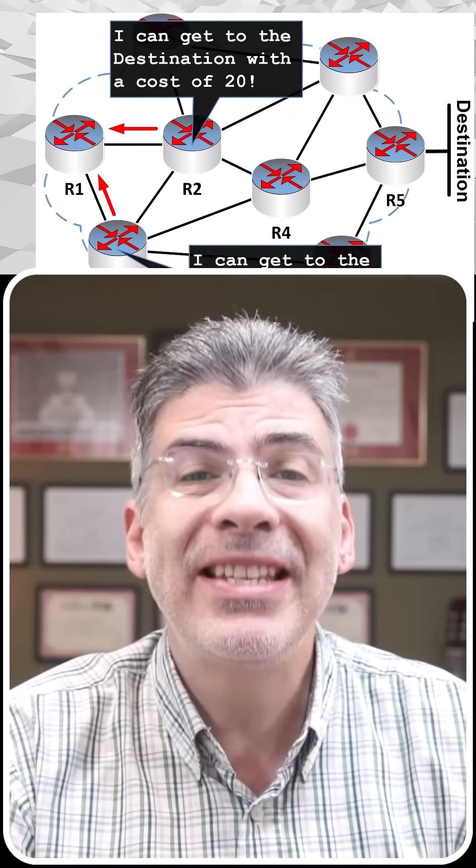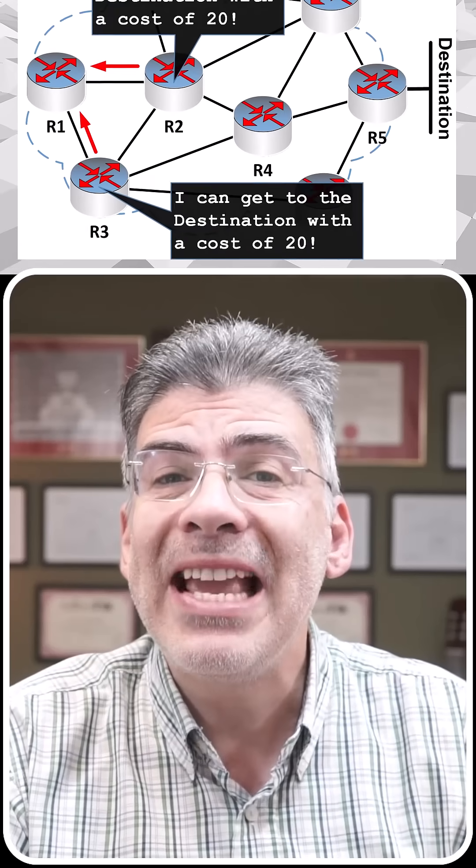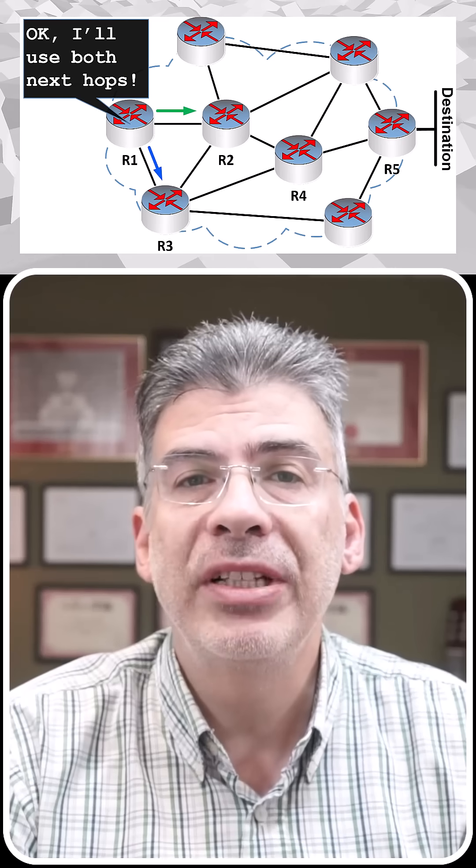When a router learns multiple next hops to the same destination network with the same metric, it installs them all in the routing table.